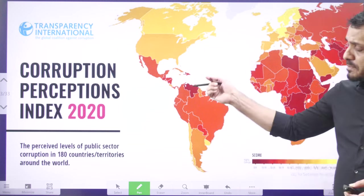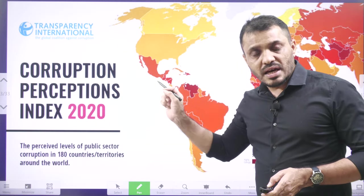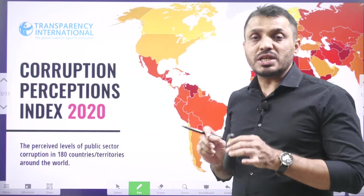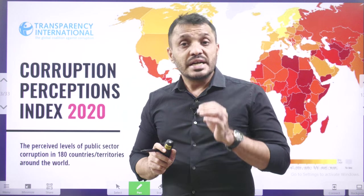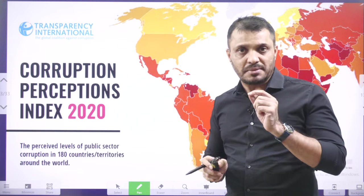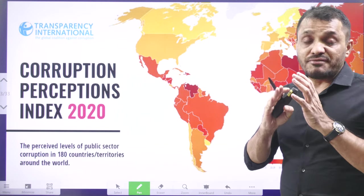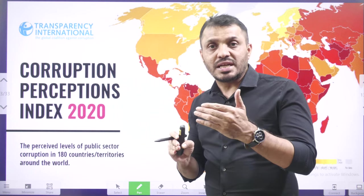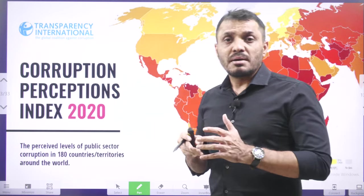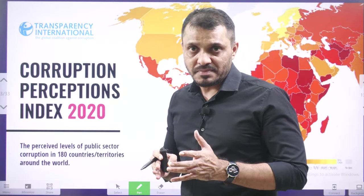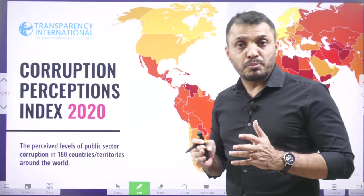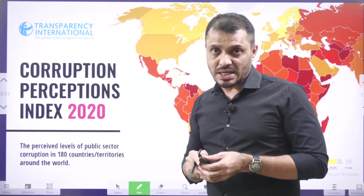Topic number two: Corruption Perception Index. This is regarding the prevalence of corruption in various countries. This report is published by Transparency International and gives a ranking based on the level of corruption perception in a particular country. Western European and Scandinavian countries perform very well because of their mature democracies, whereas Sub-Saharan African nations perform very poorly because of destabilized democracies.